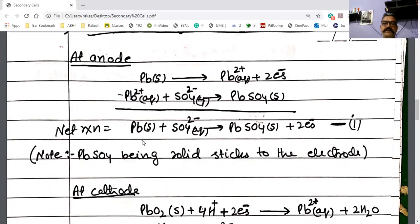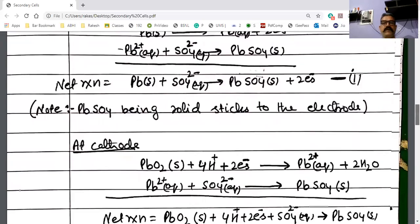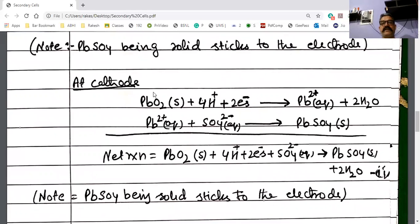This is the net reaction. At cathode what happens? Cathode is made of lead dioxide. In electrolyte, H2SO4 is present. So H+ ions and electrons from the anode come. Lead dioxide, H+ ions, and these electrons which are coming from the anode react to form lead in +2 oxidation state and water. At cathode, PbO2 + 4H+ + 2e- gives Pb2+ + 2H2O. Lead is in plus four oxidation state in lead dioxide.